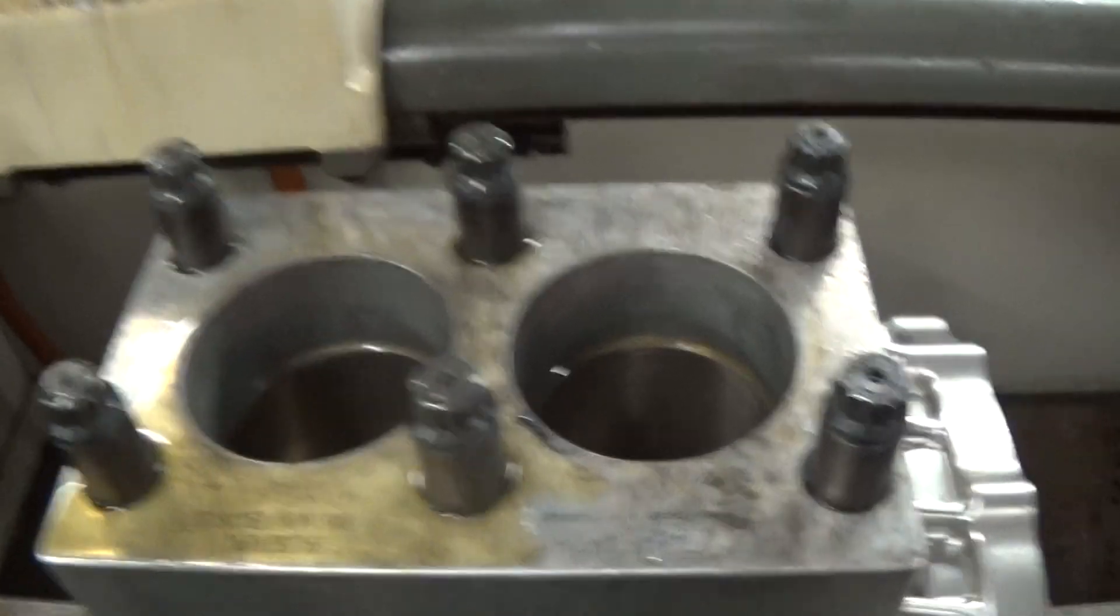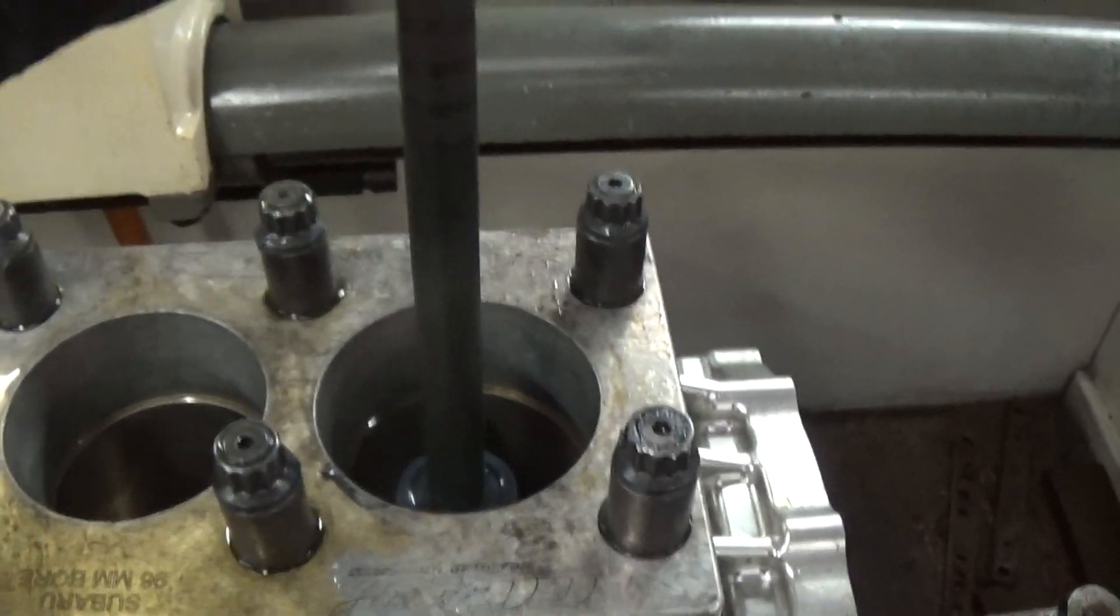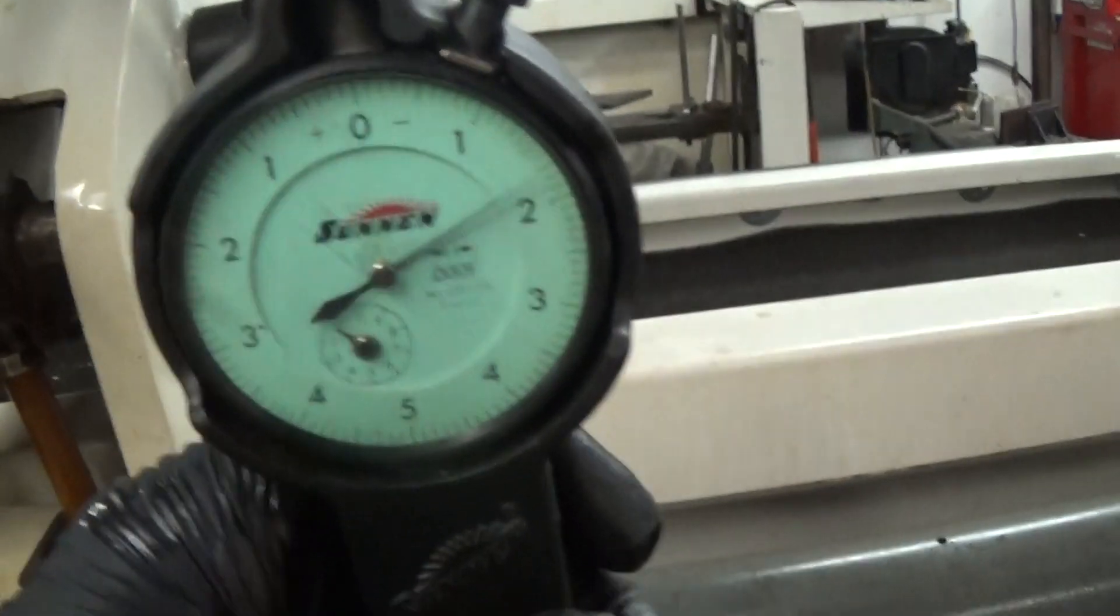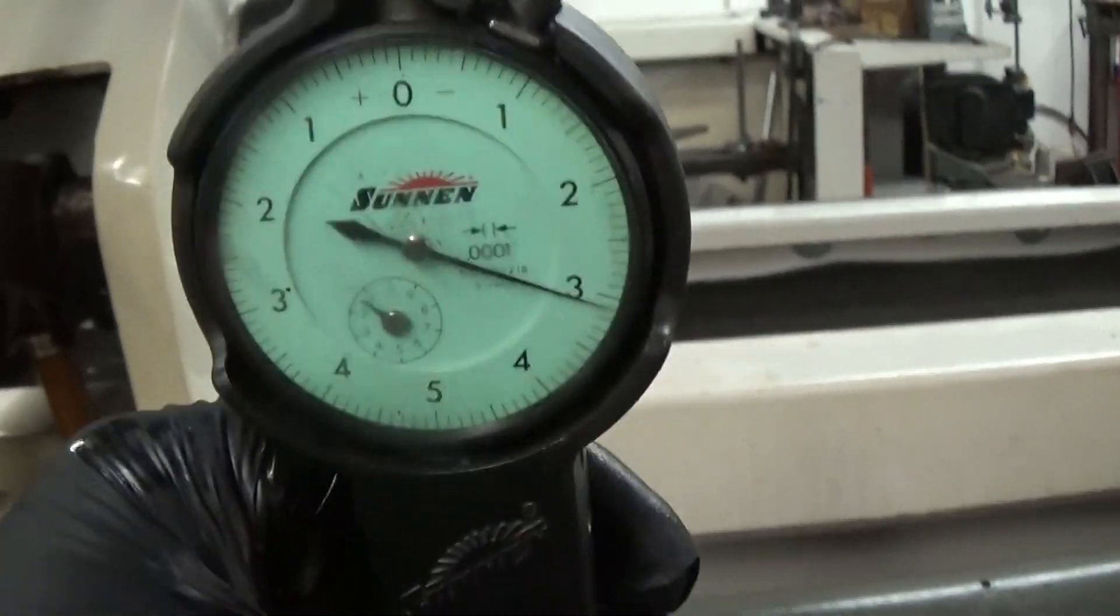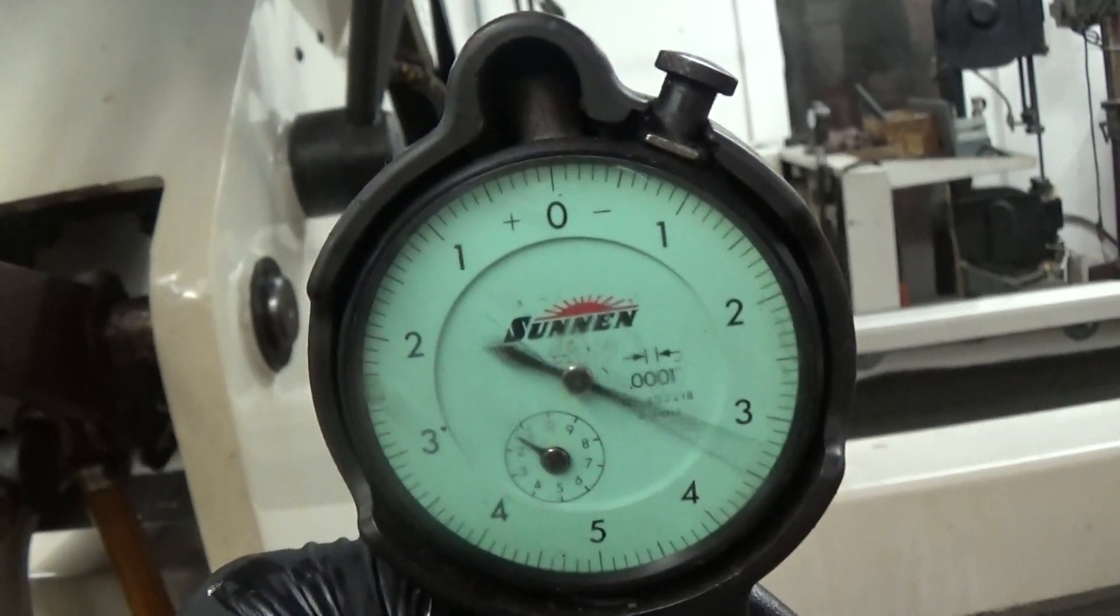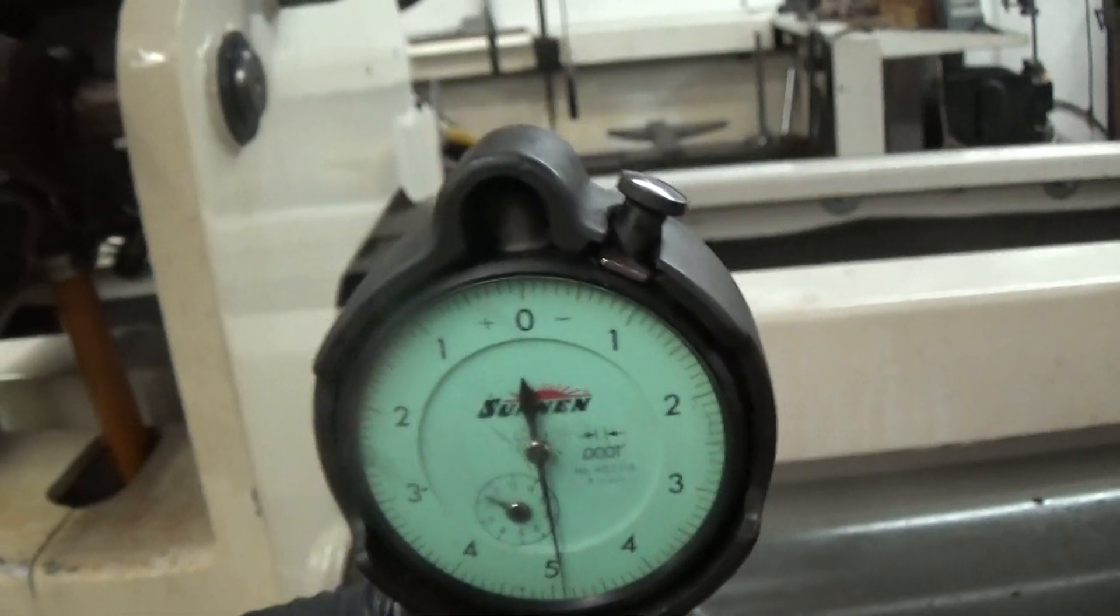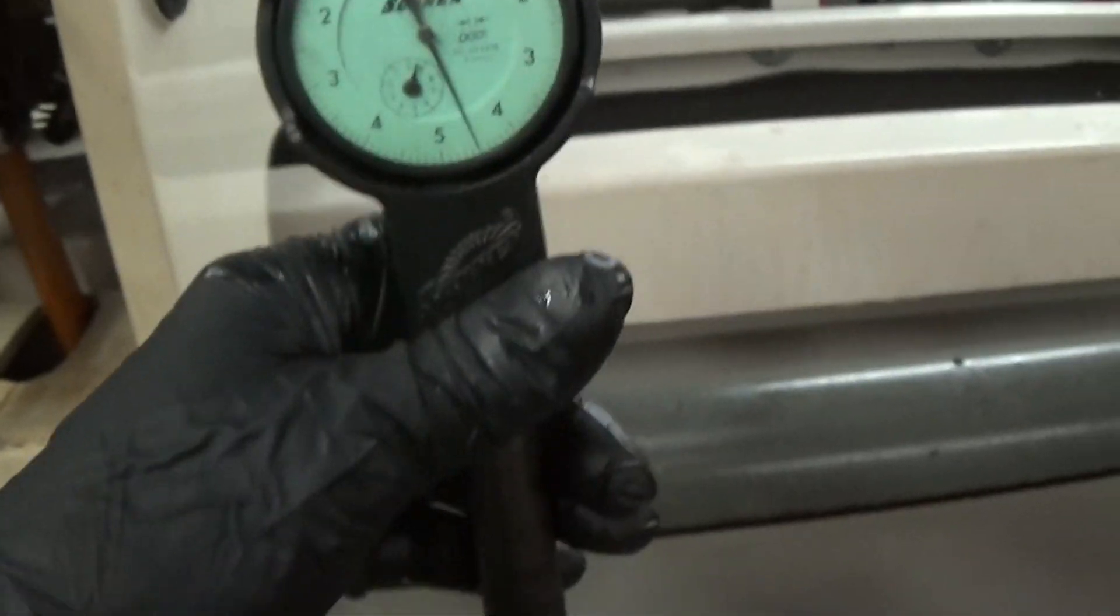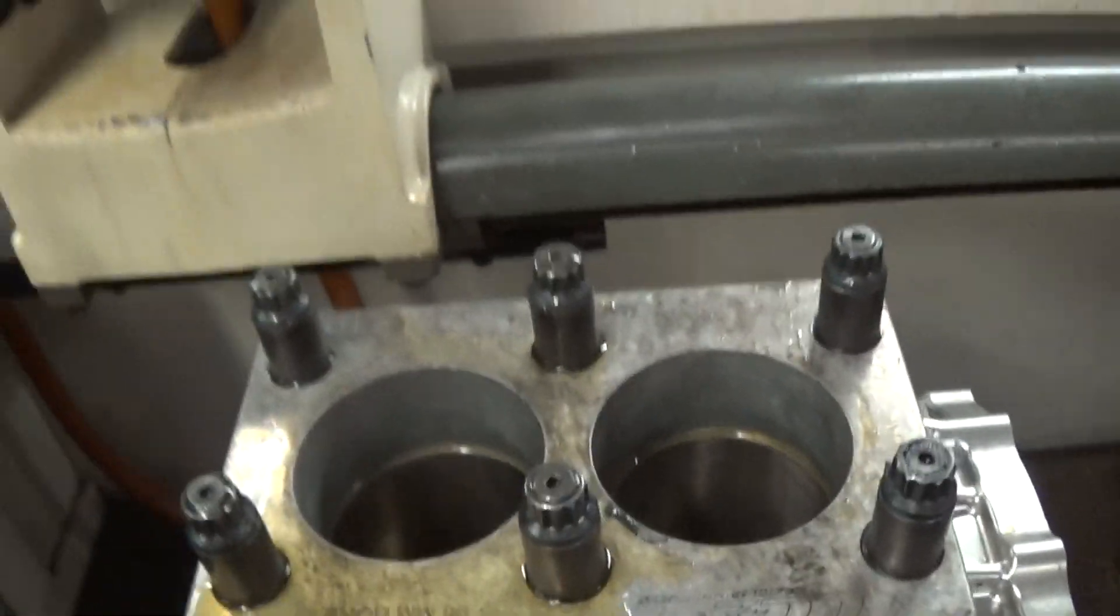This cylinder I haven't touched - it's just as it sits in the block. At the top we have 0.0035 inches, and on the bottom we've got 0.005 inches. So there's 0.0015 inches of taper in these cylinders. They had a little bit before I put them in, but once you install them and torque the deck plates down, they distort.